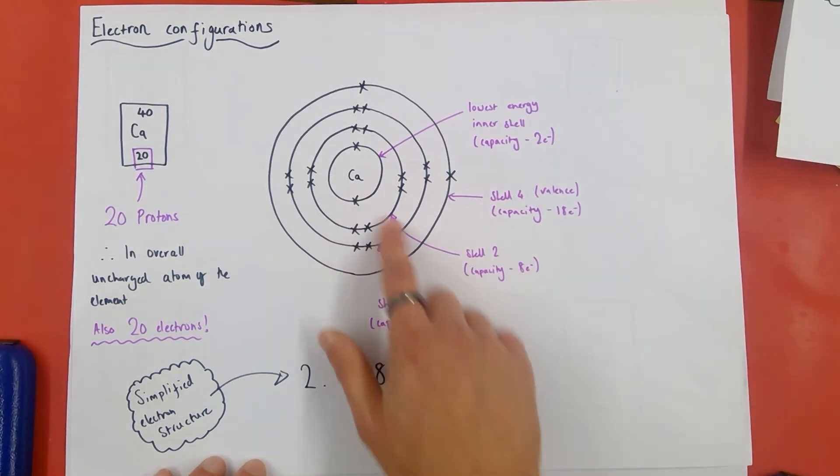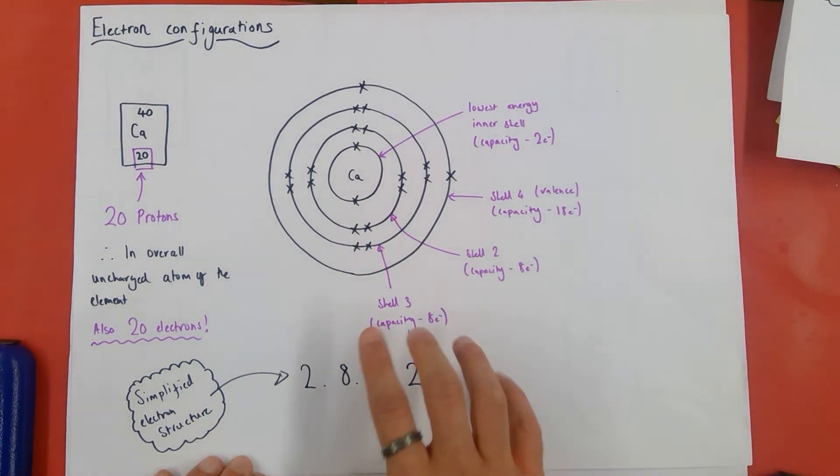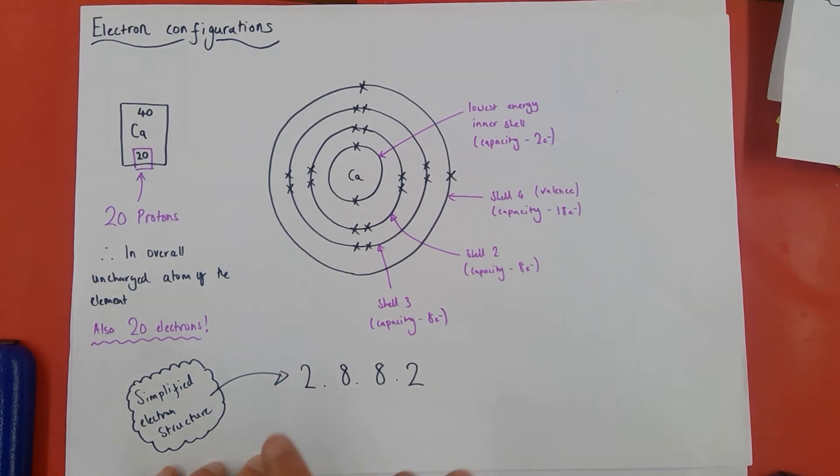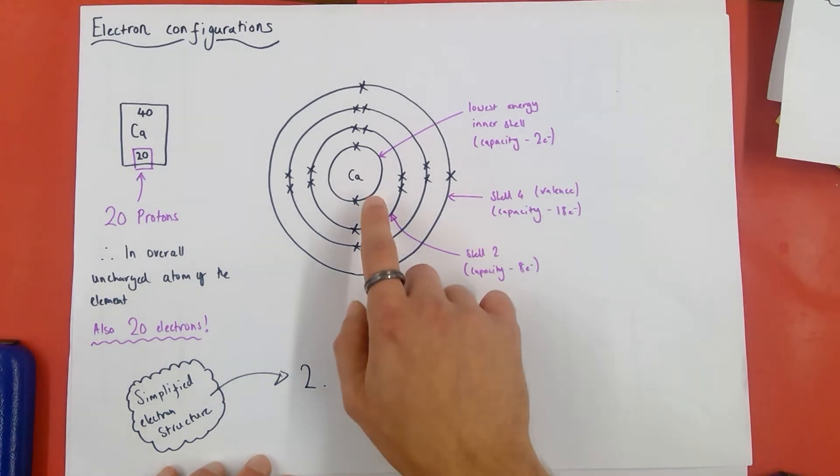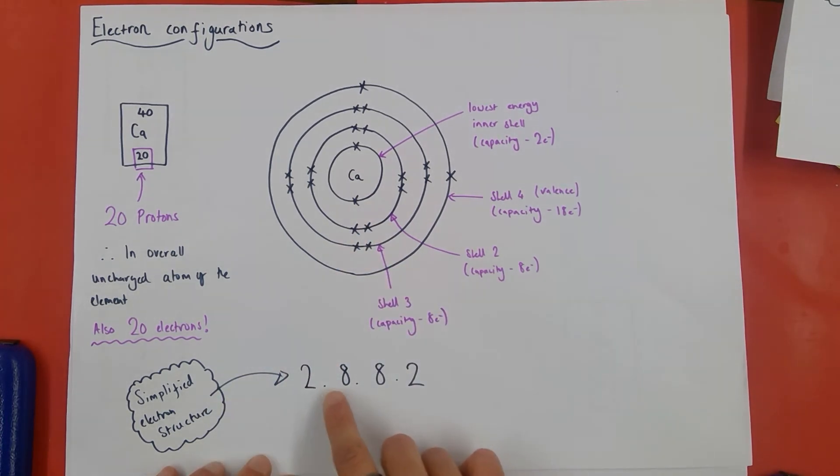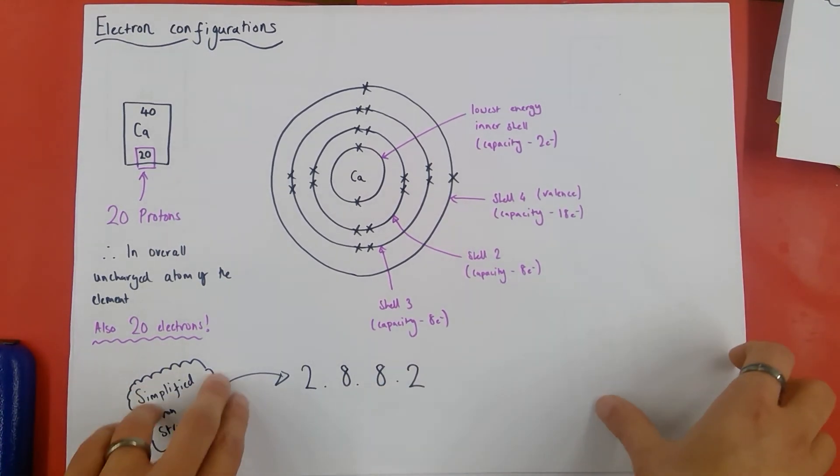Now, that can be quite laborious. There is a simplified electron structure we can write, which simply tells me how many electrons there are in each of the shells. So 2, 8, 8, 2 is the electron configuration of calcium, 2 in the first shell, 8 in the second shell, 8 in the third shell, and 2 in the fourth shell, or energy level.